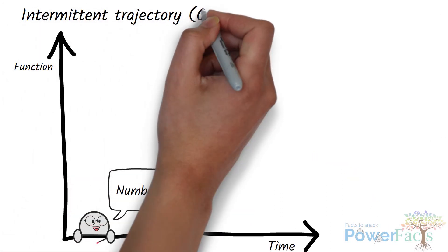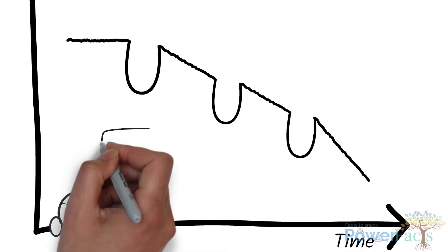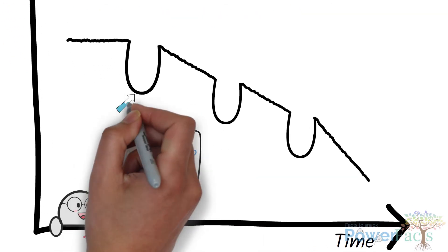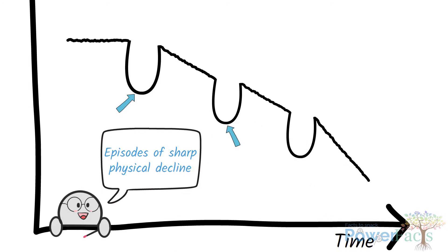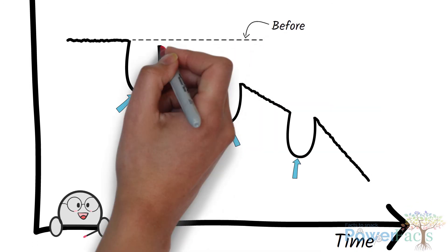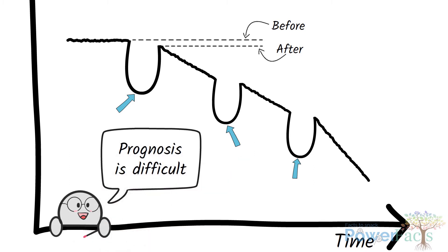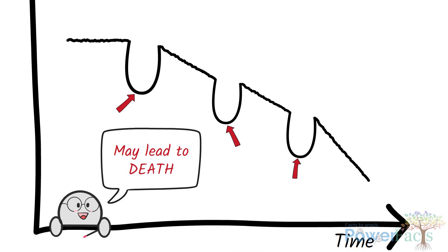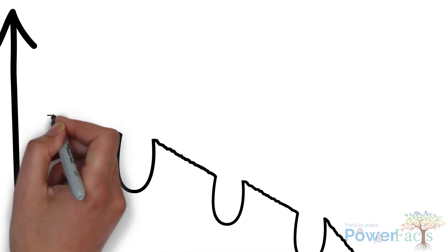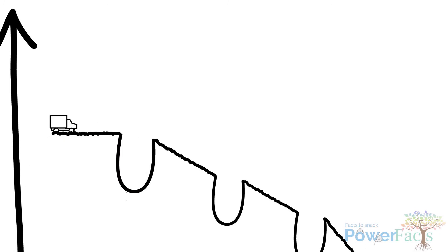2. Intermittent trajectory, which usually happens in organ failure. It is characterised by episodes of sharp physical declines due to acute medical changes. There can be recovery of function after each episode, but it may not return to the original level of function. Prognosis is difficult, as any one crisis can result in death. ACP should be in place to understand patients' wishes while they are well, as deterioration is often sudden and fast.